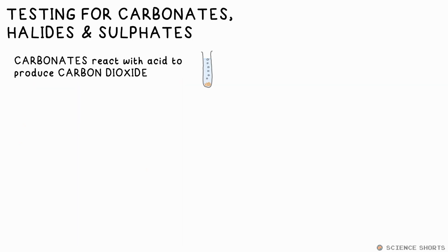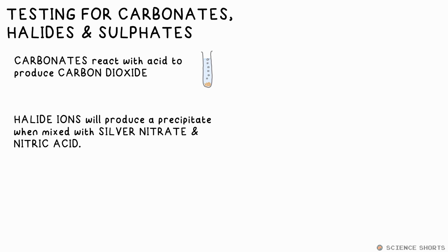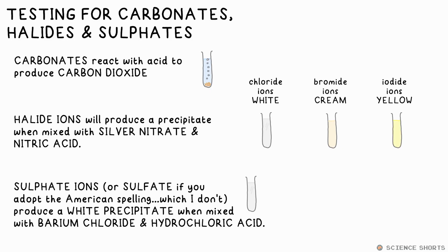We test for halide ions - that's halogen ions - by mixing with silver nitrate solution and nitric acid. If chloride ions are present, silver chloride is made - that's a white precipitate. If it's bromide ions, silver bromide is made - that's cream. Silver iodide yellow. Finally, sulfate ions will produce a white precipitate when mixed with barium chloride and hydrochloric acid.